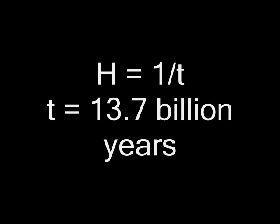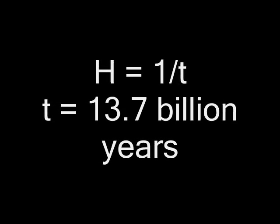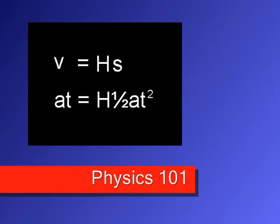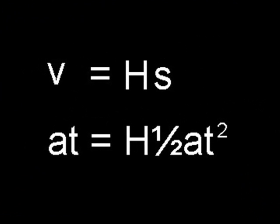That would make the universe about 13.7 billion years old. But if a galaxy is accelerating away from us at rate A, then Hubble's equation becomes A times T, which is the speed the galaxy has after T time, equals H times a half AT squared, because a half AT squared is the distance the galaxy is after T time.